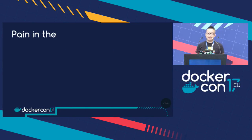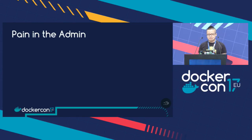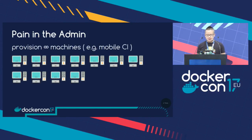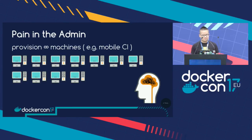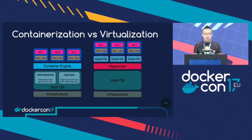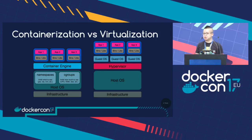It's even more pain if you think about provisioning tons of different machines for a mobile CI farm. It's just like a brain overflow — not an easy job. There are tons of different tools, but it's not easy. Before I choose Docker as a tool, I'd like to compare different solutions and why we should choose Docker instead of others.